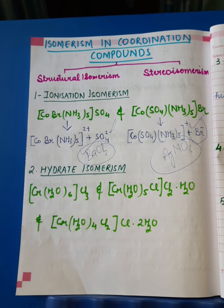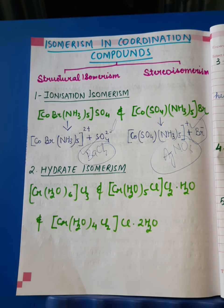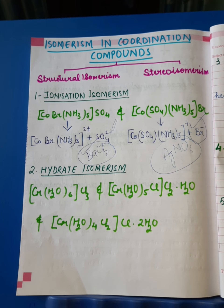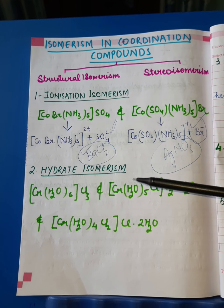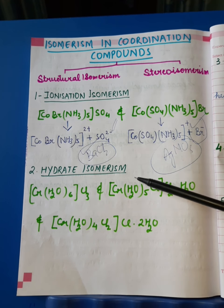This way, two compounds can be identified to have ionization isomerism between them. Moving on to the next isomerism, that is hydrate isomerism.